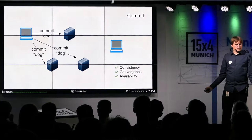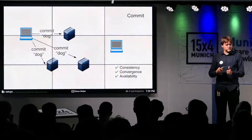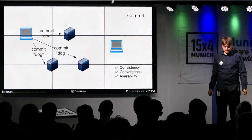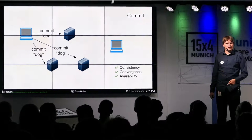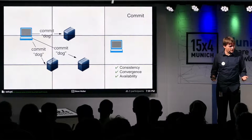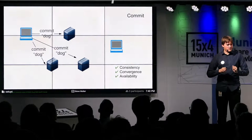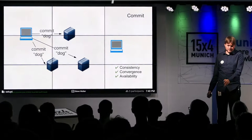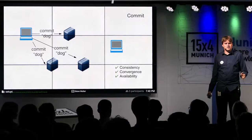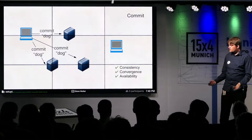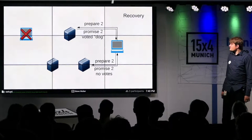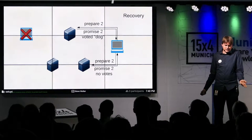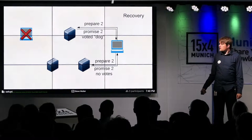This algorithm has all three properties we originally wanted: consistency, because you need a majority to win; convergence, because we can restart the algorithm with a new ballot at any point to reach a conclusion; and availability, because if any of the three servers goes down we can still reach a majority and still reach consensus.